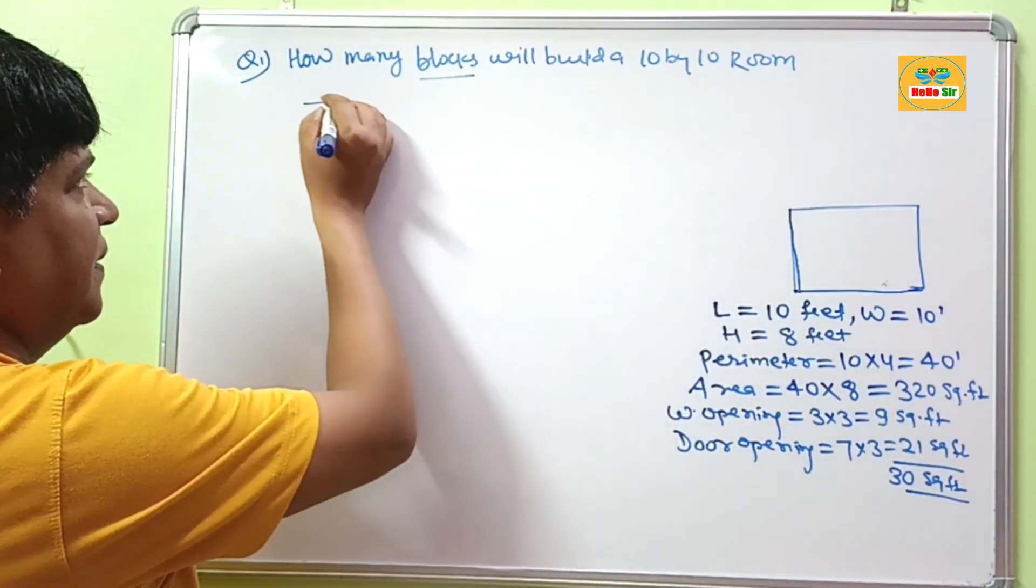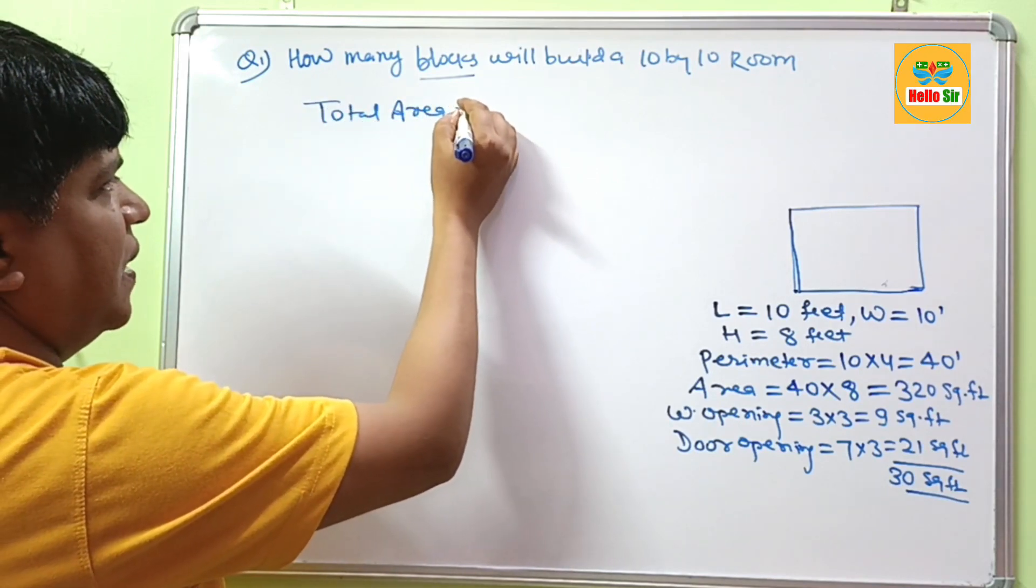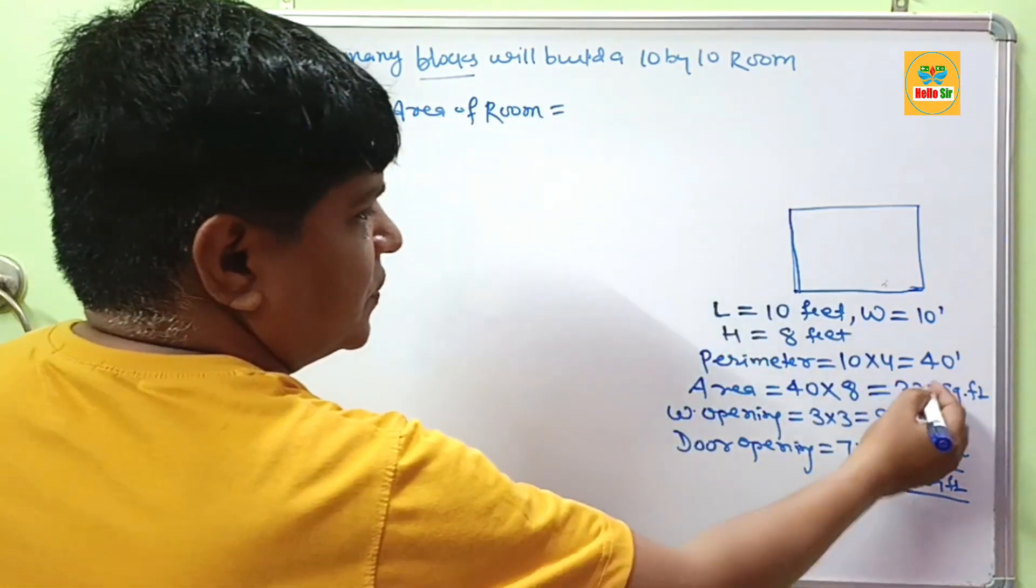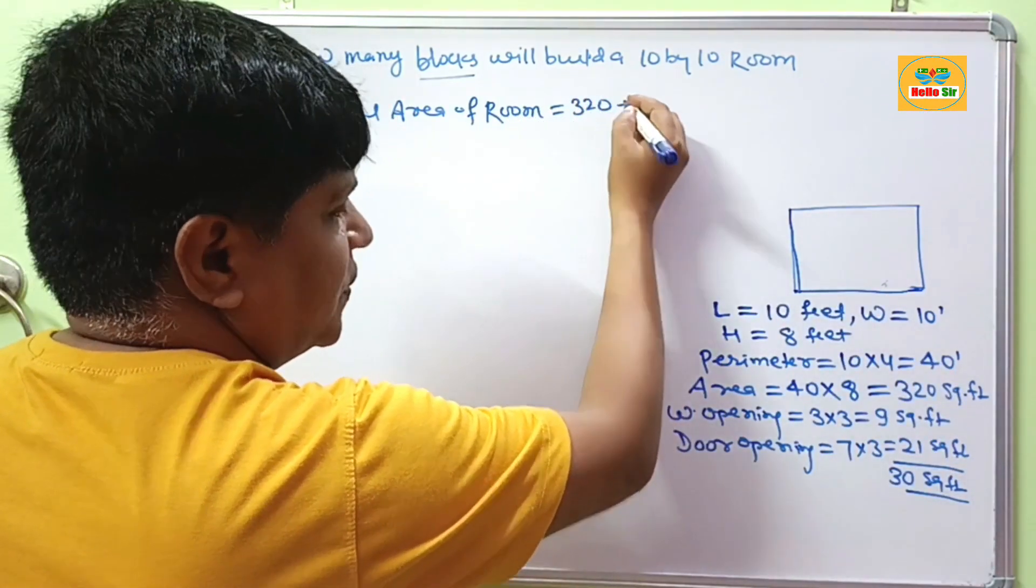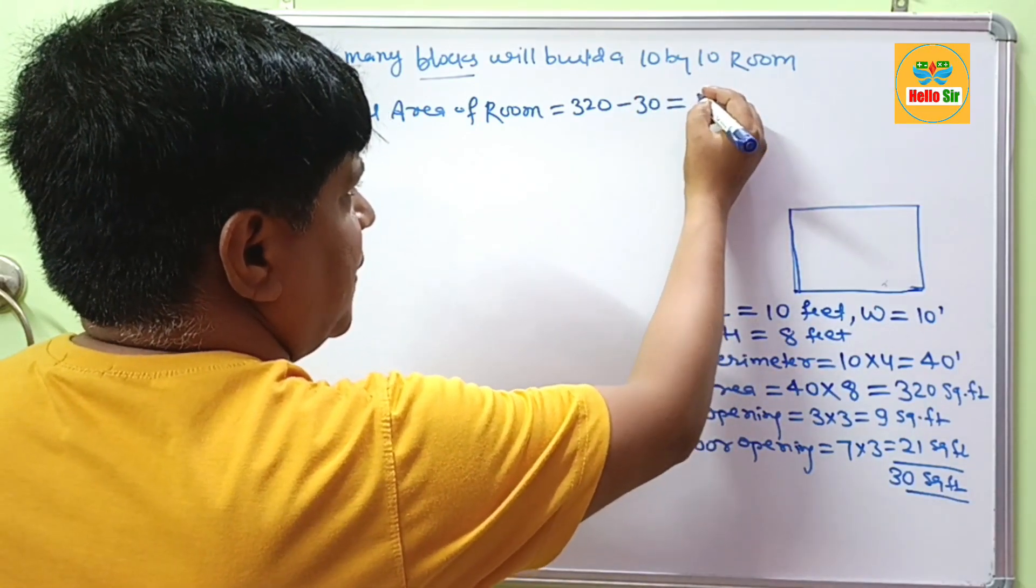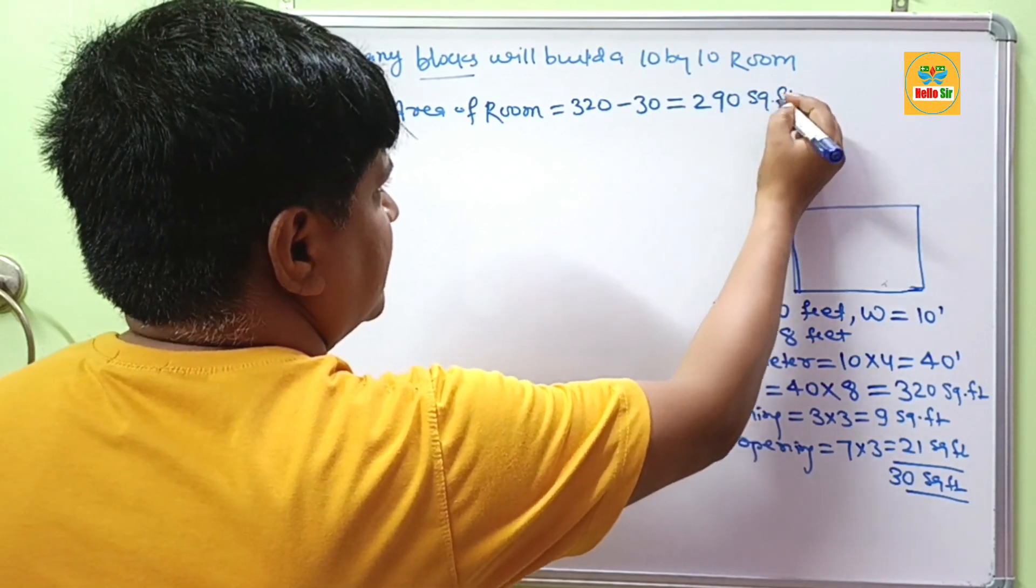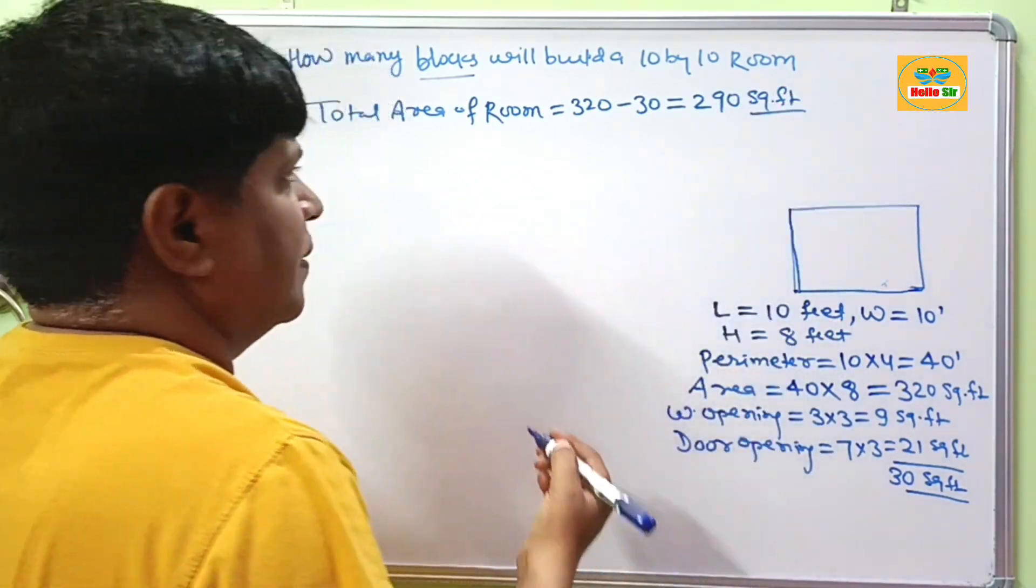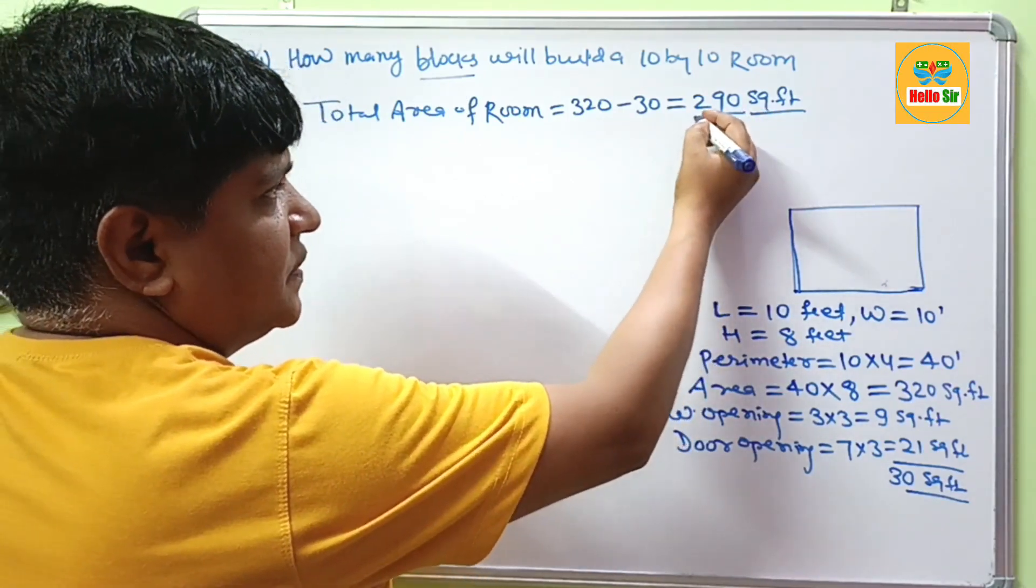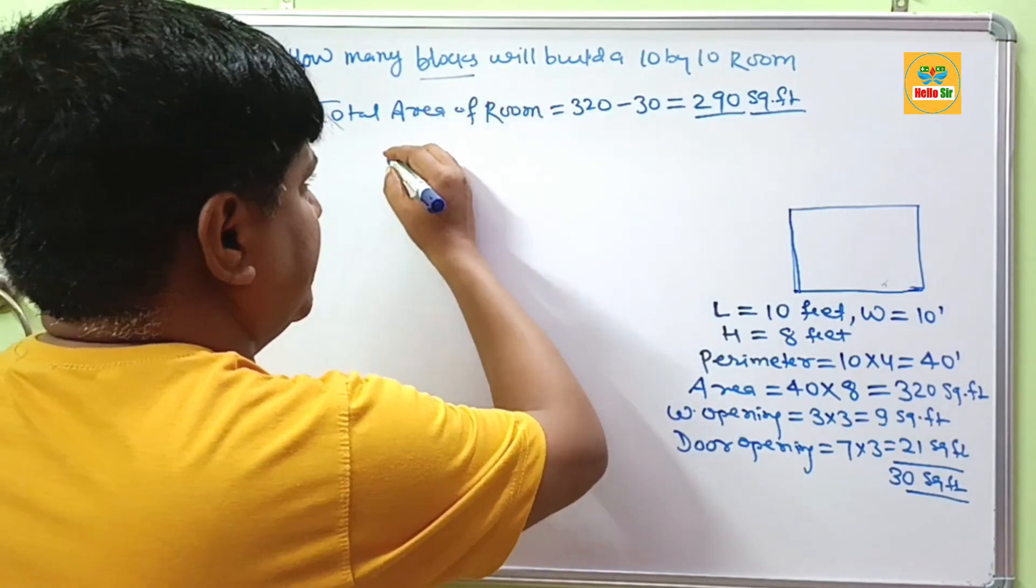The total final area of the room equals 320 square feet minus 30 square feet. This will be about 290 square feet. This area will be covered with cinder blocks and concrete blocks.